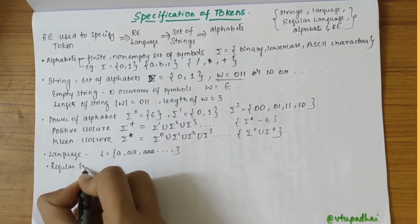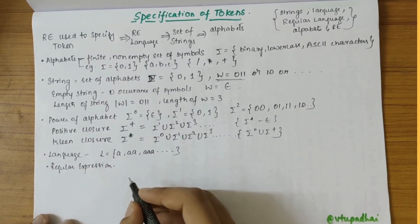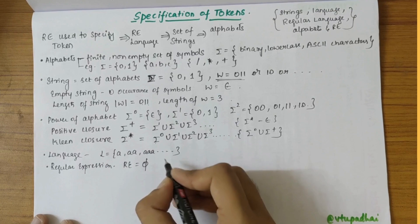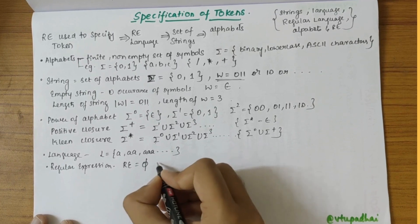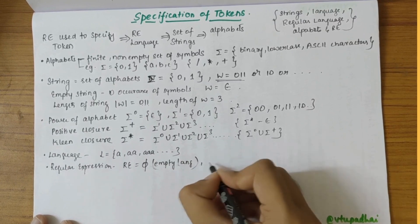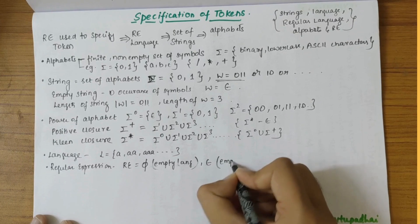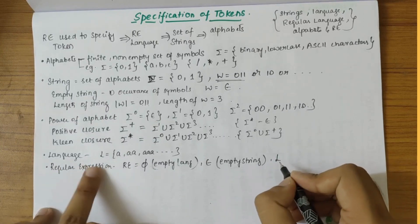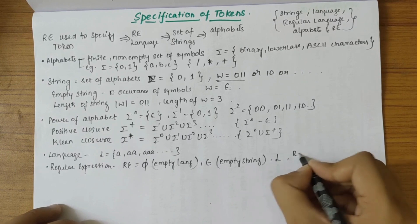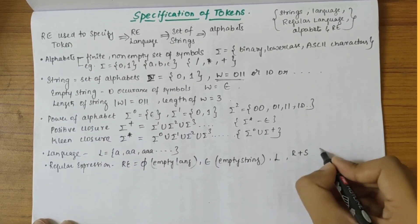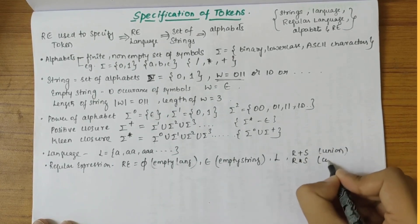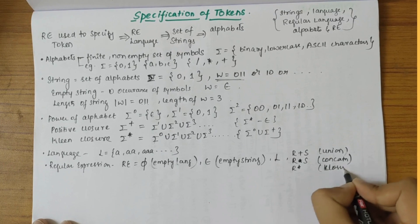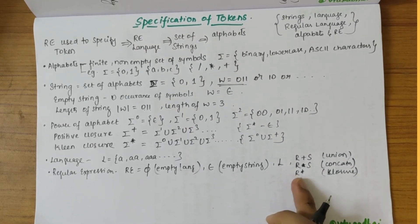Now let's look into the definition of regular expression. A regular expression is recursively defined as: it could be equal to epsilon, it could be equal to phi denoting an empty language, it could be an empty string, or it could denote any language. If we have r plus s, that is a union operation, it is a regular expression. If we have r dot s, that is concatenation, it is a regular expression. If we have r*, that is closure, it can also be considered a regular expression.